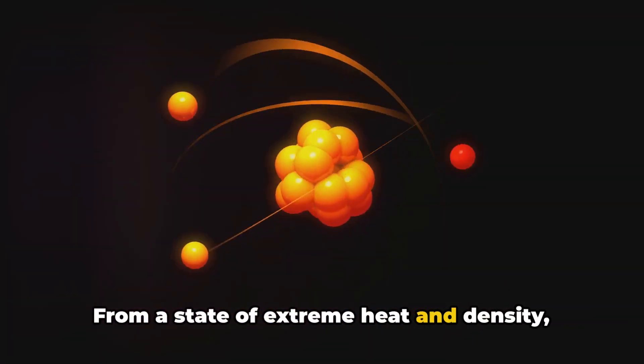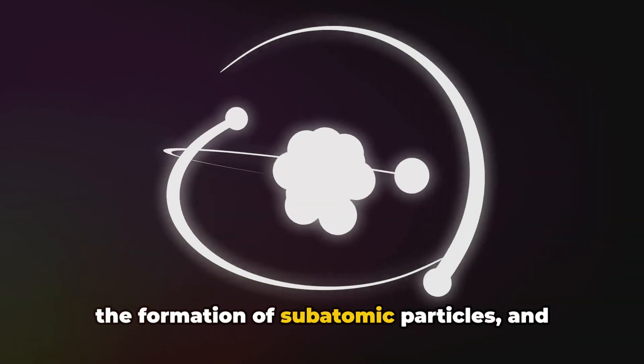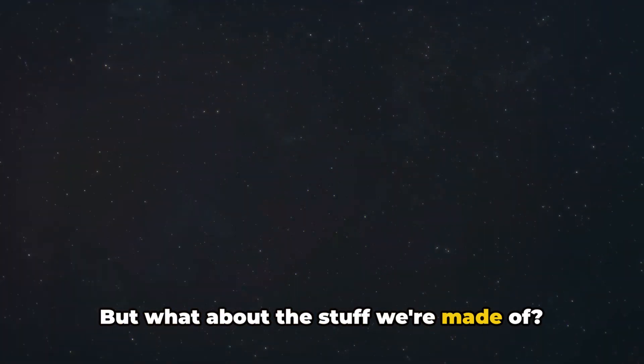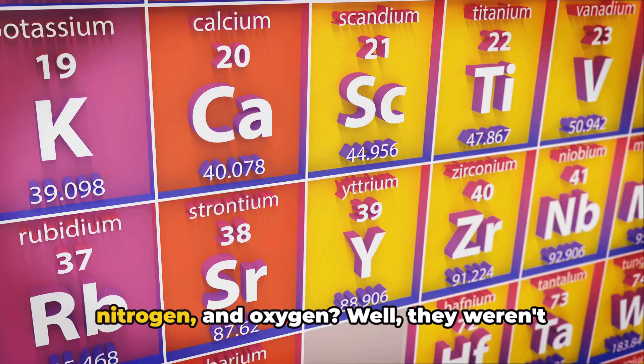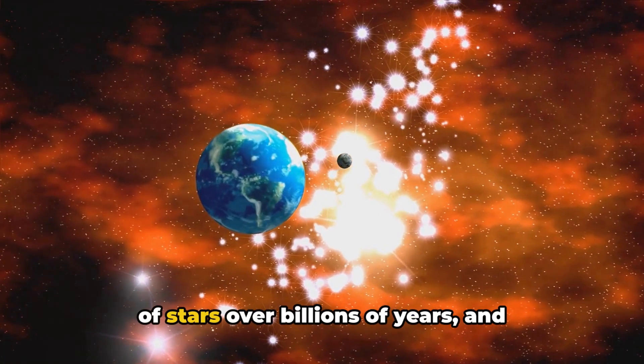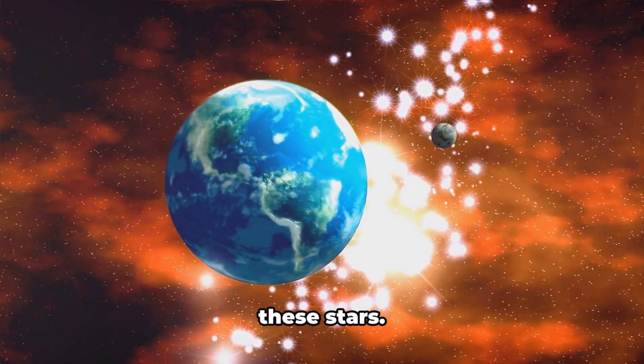From a state of extreme heat and density, it started to cool and expand, leading to the formation of subatomic particles and later simple atoms. But what about the stuff we're made of? The heavier elements like carbon, nitrogen, and oxygen - they weren't created in the Big Bang. They were cooked up later in the hearts of stars over billions of years and released into the cosmos upon the death of these stars.